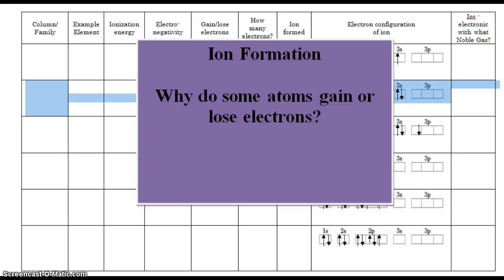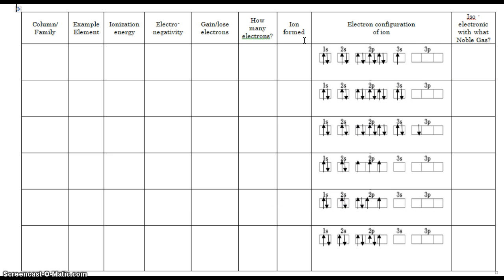Today's lesson is on ion formation. Why do some atoms gain or lose electrons? We already talked about why noble gases don't gain or lose electrons, but what about the other elements on the periodic table? Take out problem book 309, which is this chart right here, and fill it along with me. Also take out a periodic table so you can refer back to it as we fill out this table.